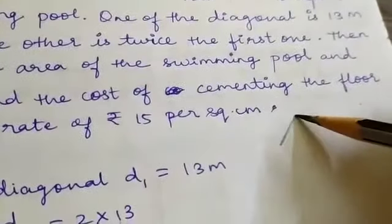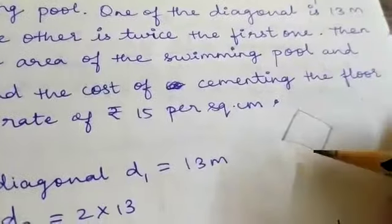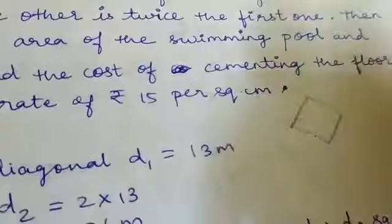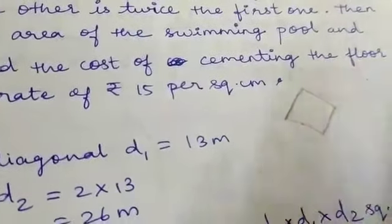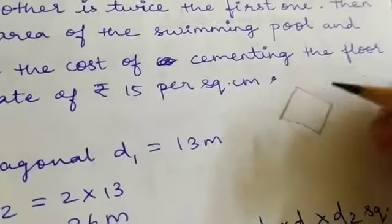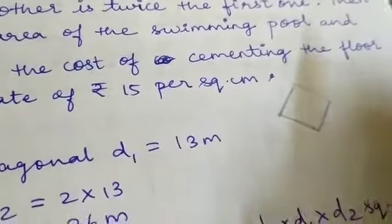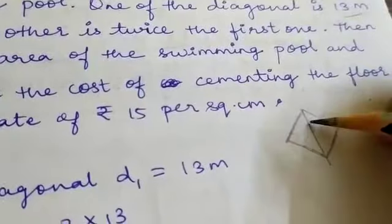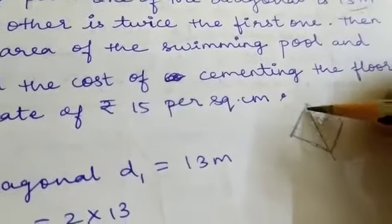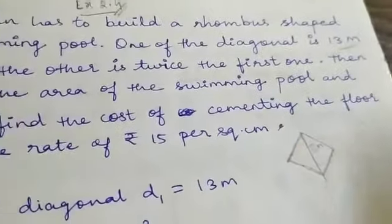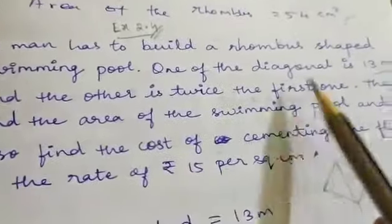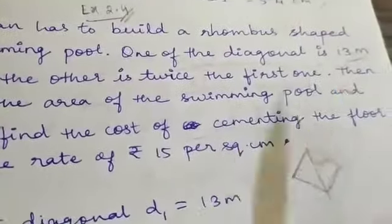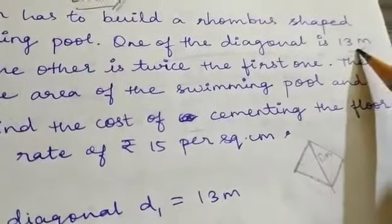In the case of this rhombus, the four sides are equal. The diagonals are not equal. Please note, if you have the diagonals equal, it would be different. So one of the diagonals is 13 meters, the other one is twice the first one.